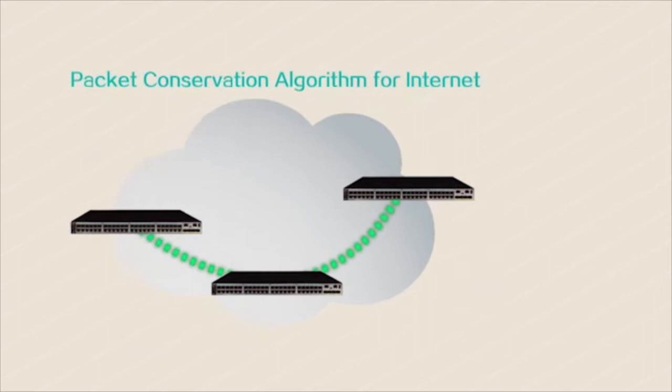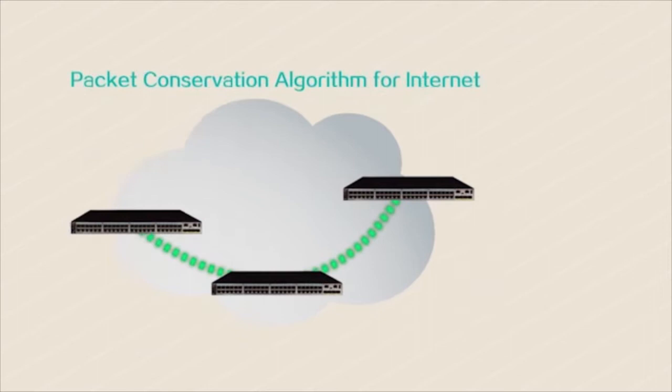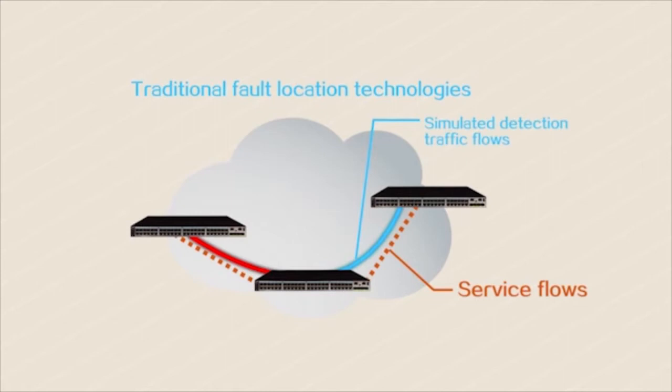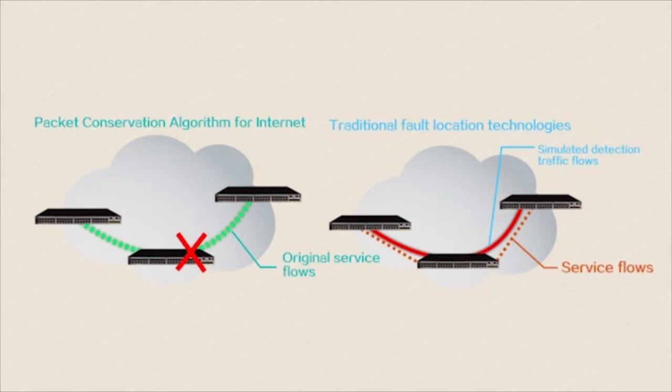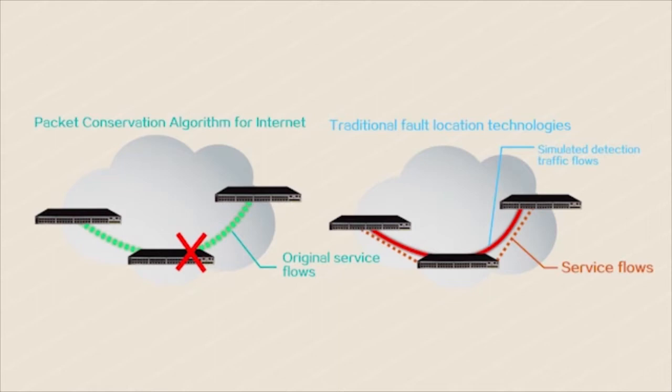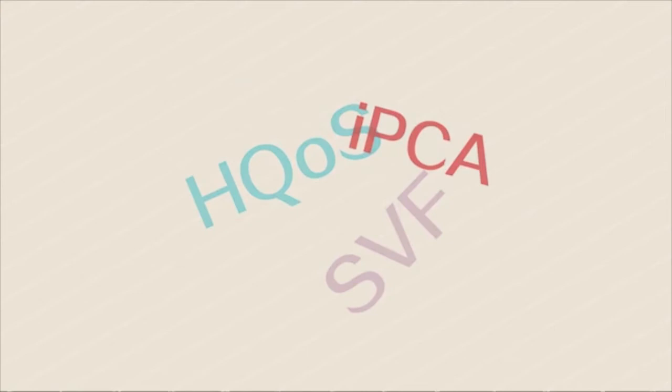In terms of network quality management, S5720HI supports Packet Conservation Algorithm for Internet, or IPCA, to detect network faults. Traditional fault location technologies detect faults by sending simulated detection traffic flows and can detect only the faulty links, while IPCA detects the faults using original service flows and can precisely locate the faulty ports. IPCA significantly simplifies network operation and maintenance.